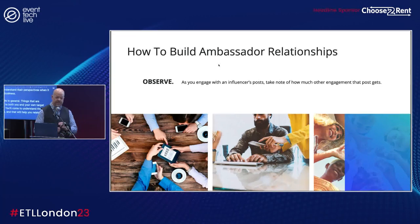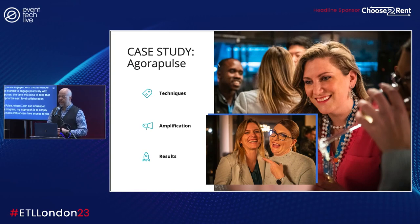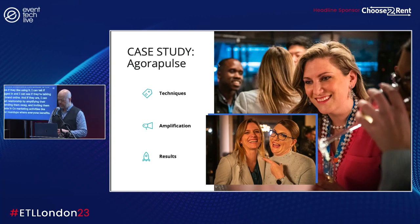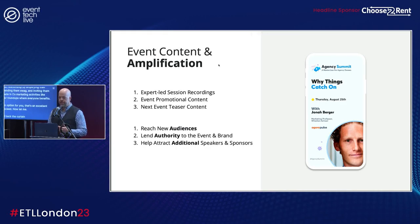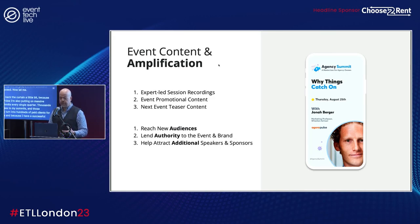Once you've engaged with an influencer and they've started to engage positively with you in response, the time will come to take that relationship to the next level: collaboration. At Agorapulse, where I run our influencer marketing program, my approach is to gift social media influencers free access to the tool and see if they like using it. I can tell if they've logged in and I can see if they're talking about our brand online. If they are, I can deepen that relationship by amplifying their content, sending them swag, and inviting them to participate in co-marketing activities like webinars or roundups where everyone benefits.